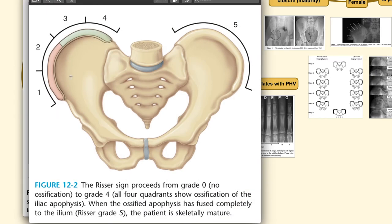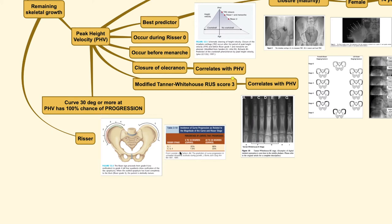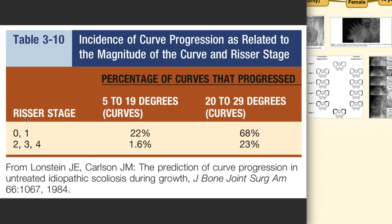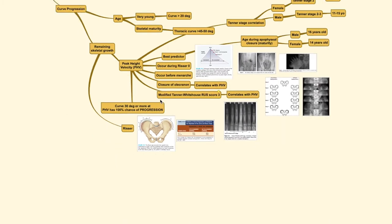Using the Risser sign alongside the patient's curve magnitude, you can predict progression. If the curve is under 20 degrees and the patient has a Risser stage 0 or 1, the probability of progression is only about 22%. However, when the curve exceeds 20 degrees in a patient with Risser 0 or 1, there is a 68% chance the curve will progress. Knowing this leads to the next question: how do you treat the patient?